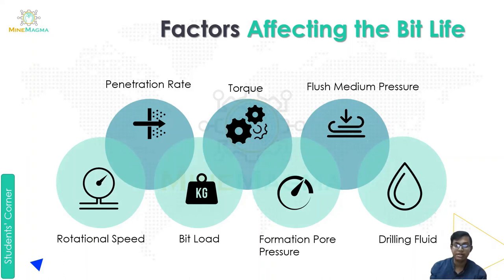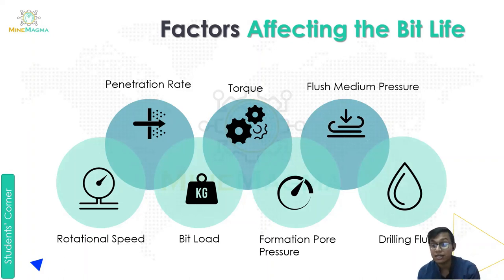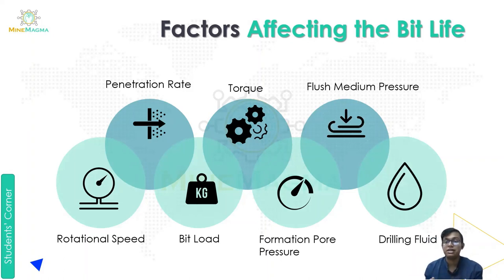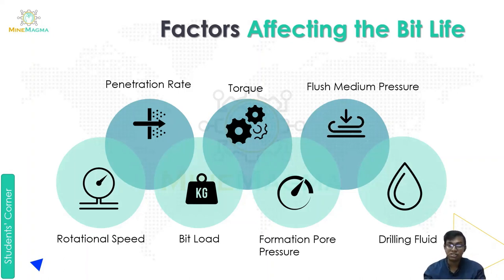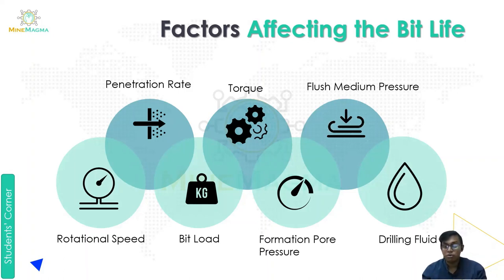The remaining factors are formation, pore pressure, and drilling fluid. So in summary, the factors affecting bit life are: penetration rate, torque, flush medium pressure, rotational speed, bit load, formation, pore pressure, and drilling fluid.